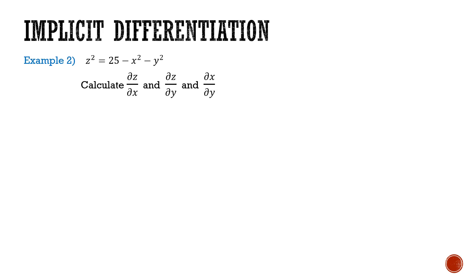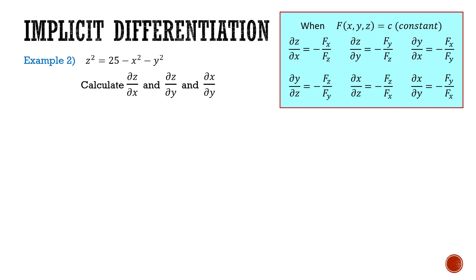For this function, I don't necessarily need to use implicit differentiation — I could easily isolate my z's, x's, and y's. But I thought I would do it with implicit differentiation nonetheless. So let's use implicit differentiation rules. Now it's a three-variable problem, so there are a lot more combinations that we're looking at.